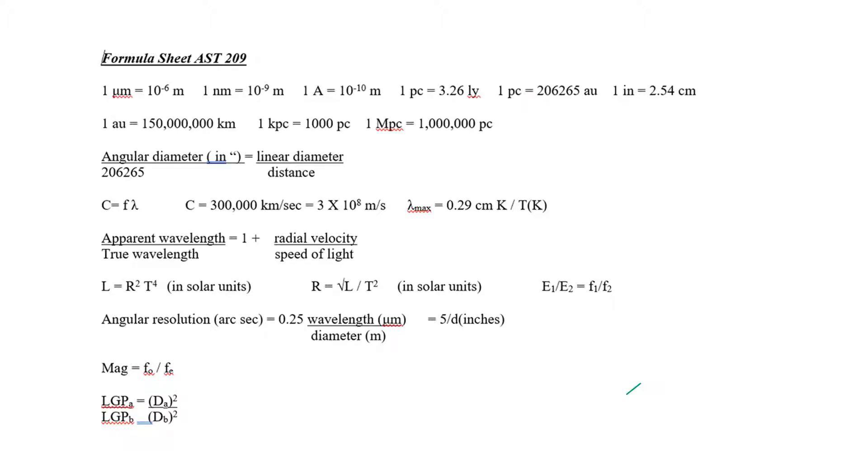There are two formulas for the angular resolution of a telescope. I'm going to circle them here in green for you. In both cases, the angular resolution is in seconds of arc or arc seconds. The simpler version, which I'm underlining, is the number 5 divided by the aperture or diameter in inches.